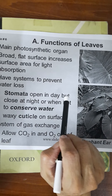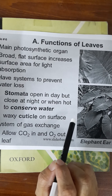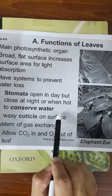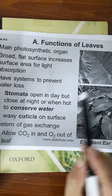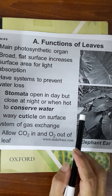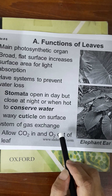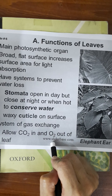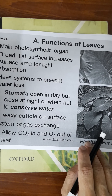Leaves also prevent water loss because they have small pores called stomata. These are open in the daytime but close at night, and in very hot conditions they conserve water. Leaves also have a waxy cuticle on the surface of the epidermal cells. Additionally, through the stomata, exchange of gases takes place — during photosynthesis carbon dioxide enters and oxygen goes out, while in respiration oxygen is taken in and carbon dioxide goes out.